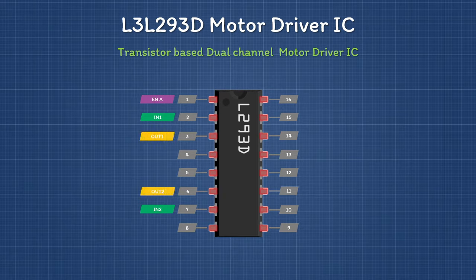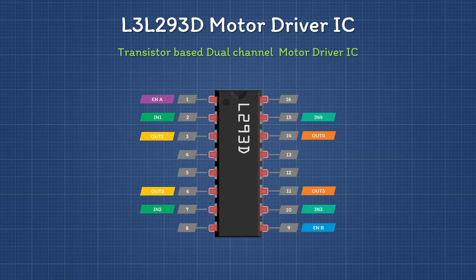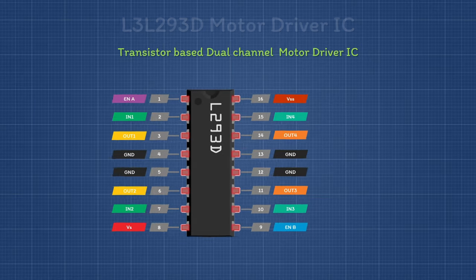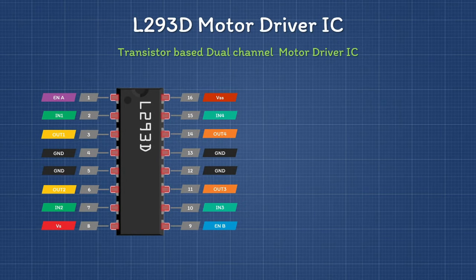Pin 3 and pin 6 provide output for motor 1. Similarly, the control signal for the second motor is on the right side, and pin 11 and pin 14 provide output for the second motor. Pin 16 is the 5 volt input used to run the driver. Pin 8 is VCC for the motor — so if you're using a 9 volt motor you provide 9 volts on this pin, or 12 volts for a 12 volt motor. Ground pins are pins 4, 5, 12, and 13.